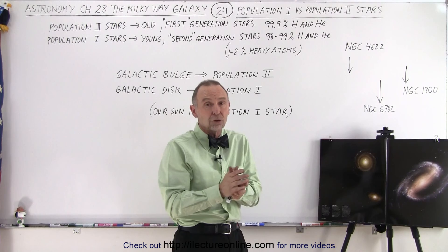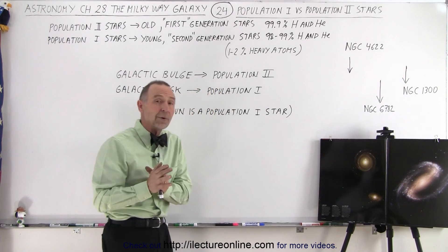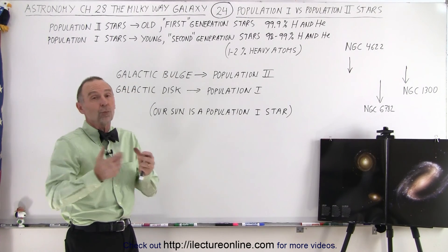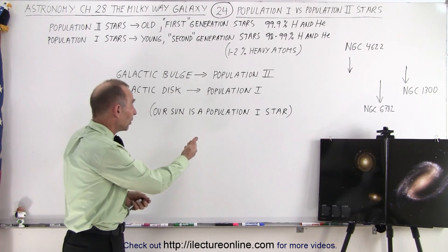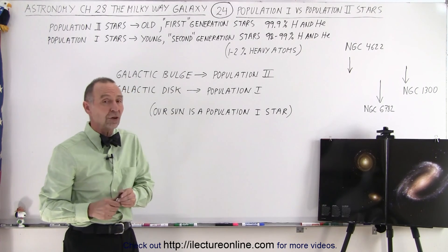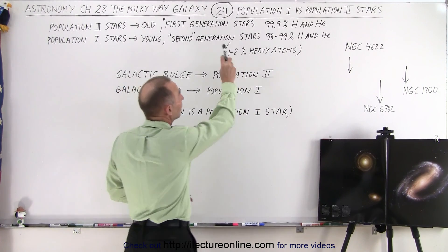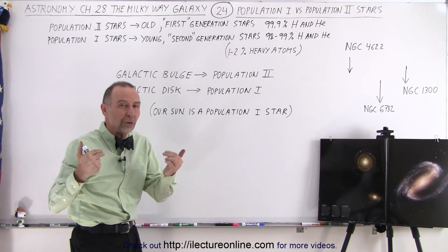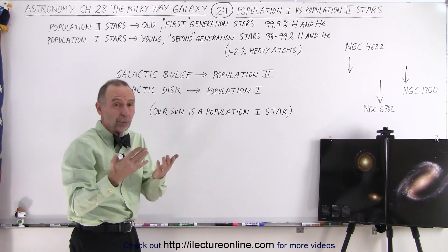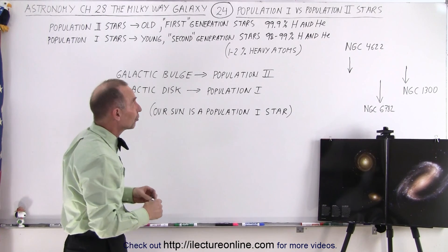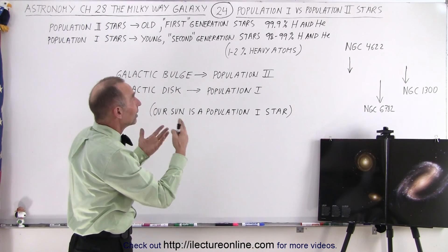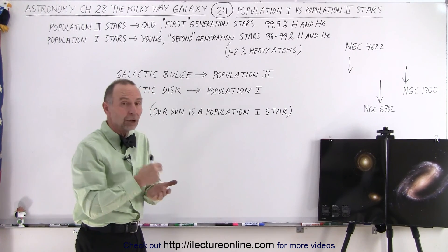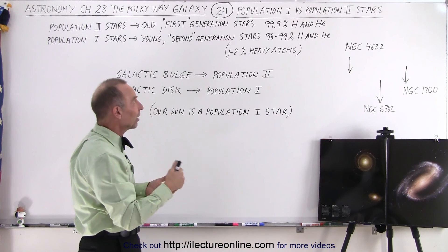We categorize them as Population 2 stars for the very old stars and Population 1 stars for the newer stars. Our sun, for example, is considered a Population 1 star. The main difference is what is contained within them. The old stars, also known as first-generation stars, were formed near the beginning of the existence of the universe. They contain almost entirely hydrogen and helium — 99.9%, or in some cases even closer to 100%.